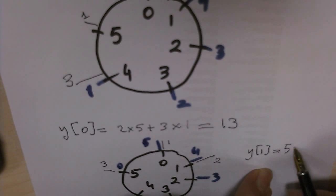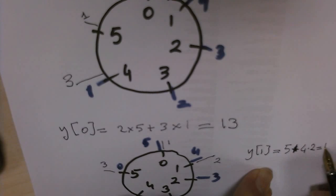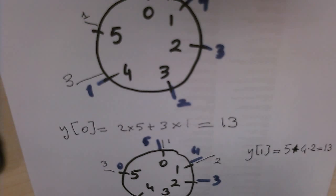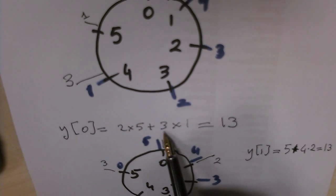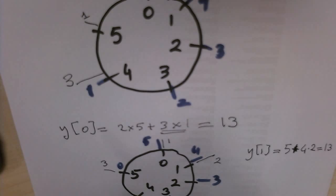So it is now y[0] times 5 plus 4 times 2 is 8, plus 5 is 13. This is the same as regular convolution. There is no corruption here.